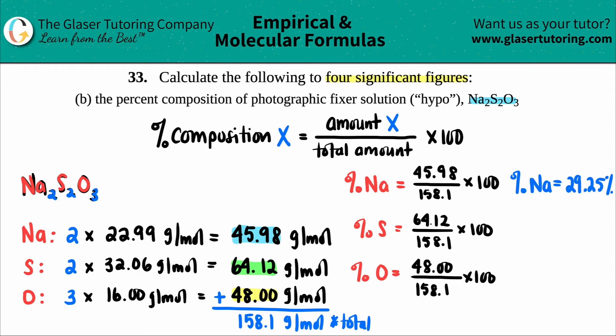Let's do sulfur now. 64.12 divided by 158... Hold on. I think I made a little boo-boo. Let me just say 45.98 divided by 158.1 times 100. Okay. That's better. 29.08. A little change, but there's a way that we can check ourselves at the end.